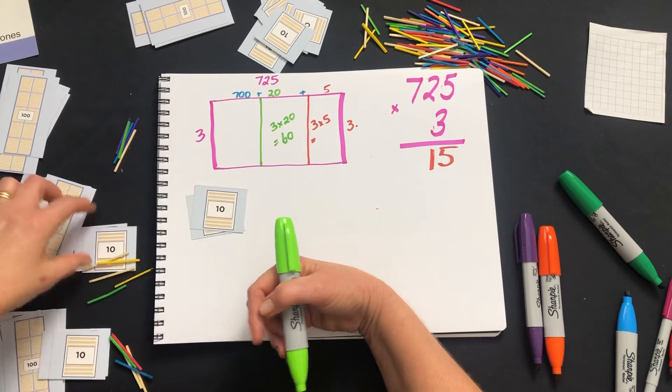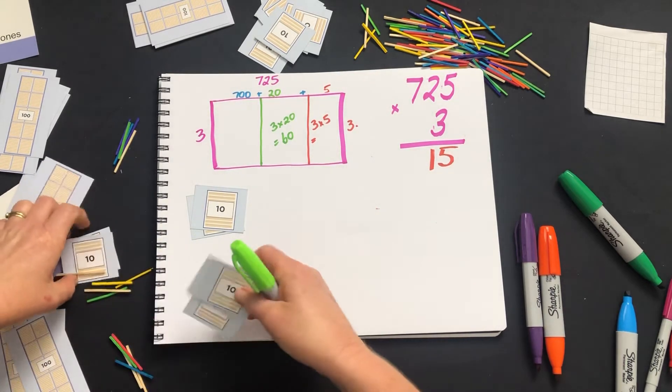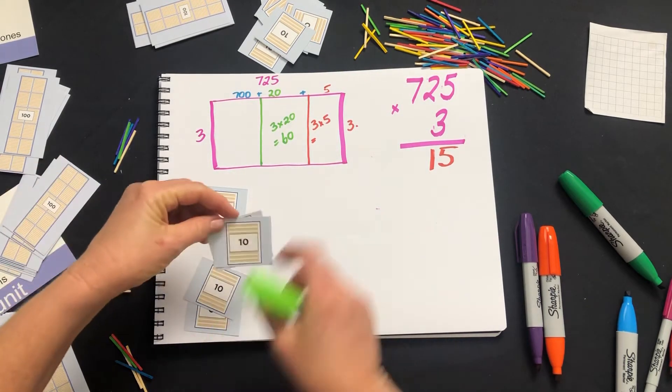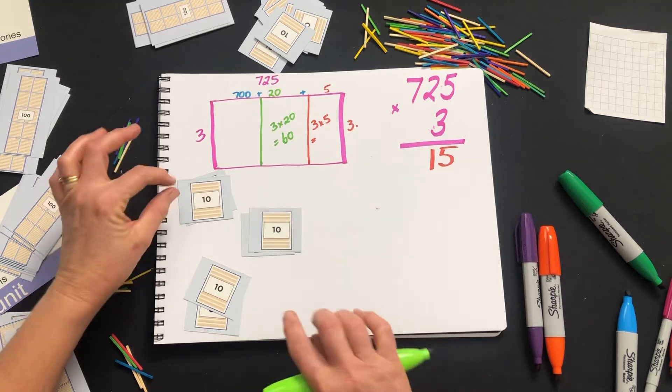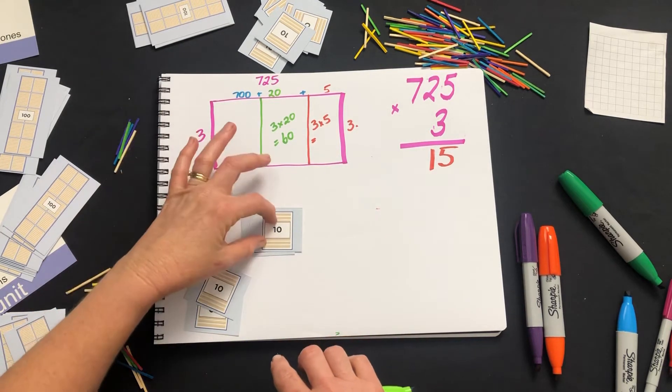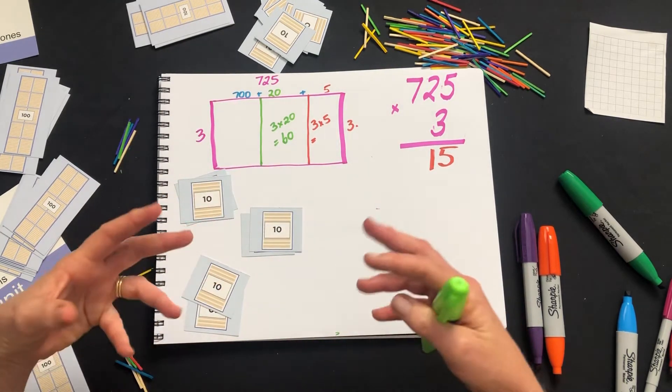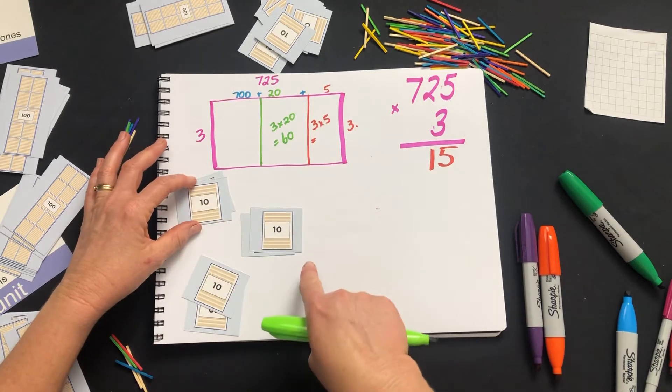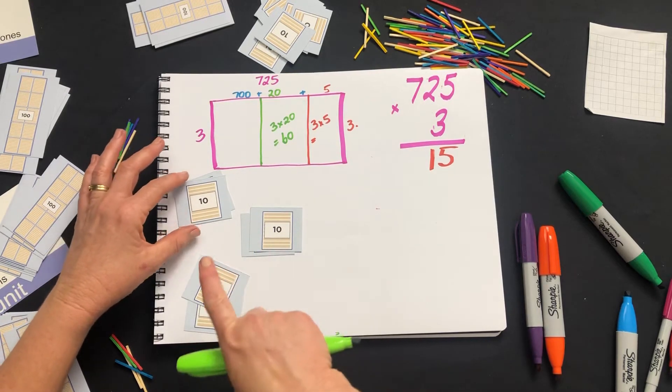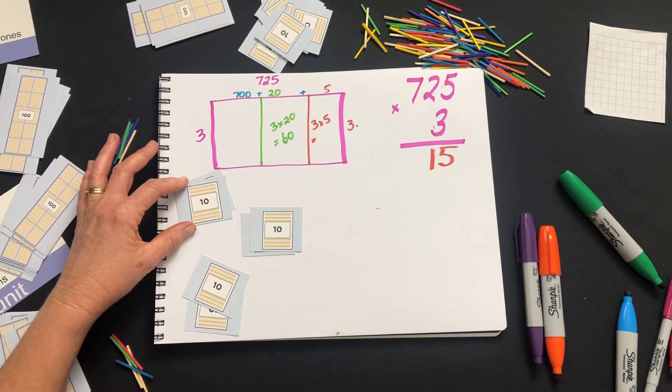Three lots of 20. That's an extra one there. 20, 40, 60. They can skip count. They can add them all together to see that there are in fact six lots of 10 there.